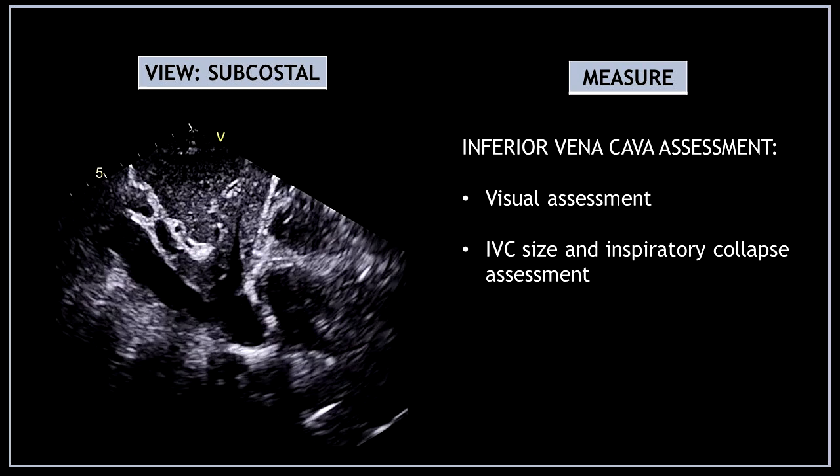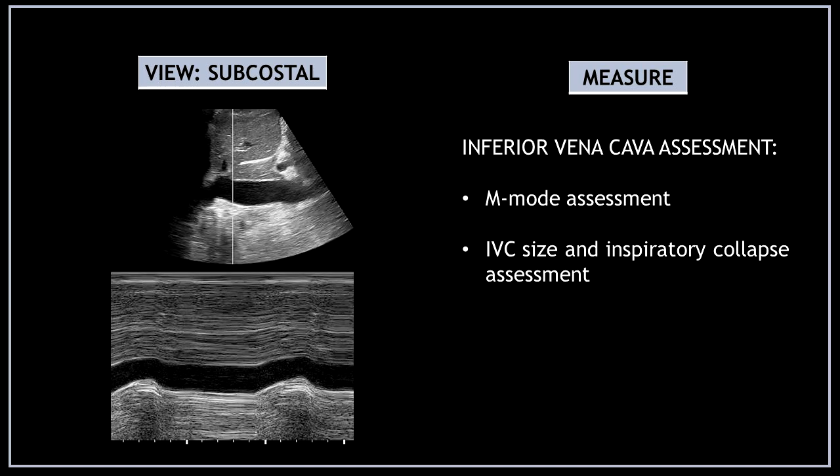Next, rotate the transducer in the same subcostal view to find the inferior vena cava and perform an inferior vena cava assessment. Visually assess the inferior vena cava, measure its size, and perform an inspiratory collapse assessment. In this view you can also use M-mode to assess the inferior vena cava size and the inspiratory collapse.